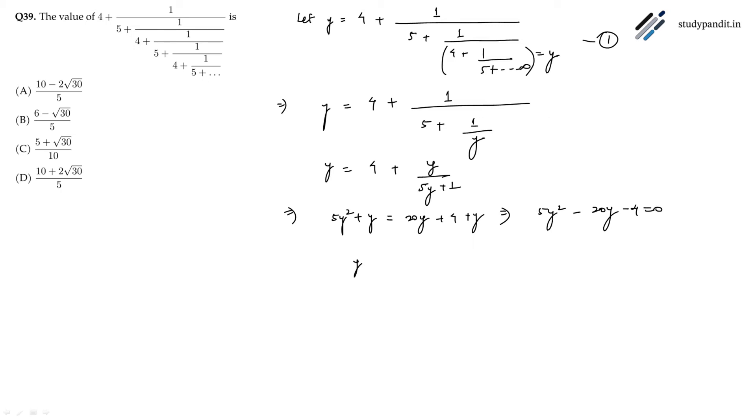We will get y equals 20 plus minus under root 400 plus 80 divided by 10. So we will get y equals 20 plus minus 4 root 30 divided by 10.